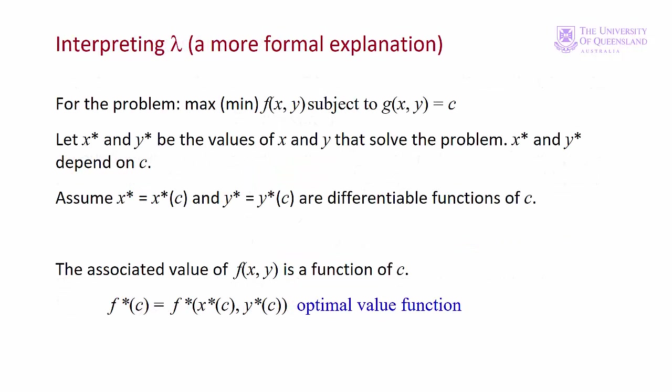Here we'll introduce the optimal value function. As we saw in the diagram, increasing the right hand side of the constraint c changes the optimal solution. We designate the optimal solutions x* and y*, so we can have many optimal solutions x*, y* that depend on the value of c. The optimal value function is comprised of those values of the objective function that are optimal given that the constraint c is changing.